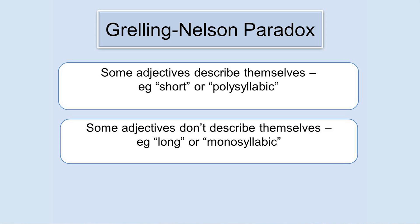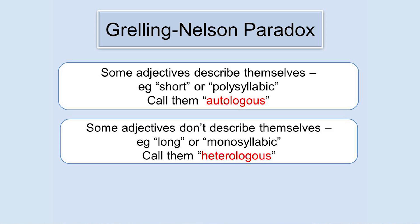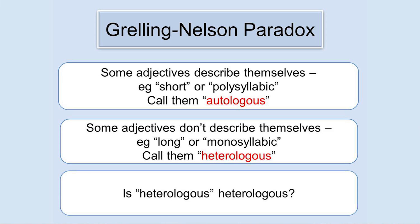Others, like 'long' and 'monosyllabic', do not describe themselves — 'long' is not a long word, and 'monosyllabic' has more than one syllable. Let's call those adjectives that do describe themselves autologous, and those that don't, heterologous. Now, is the adjective 'heterologous' itself heterologous? If so, then it doesn't describe itself — but if it doesn't describe itself, then by definition it is heterologous and so it does describe itself. On the other hand, if it's not heterologous, then that means it doesn't describe itself, so it is heterologous.